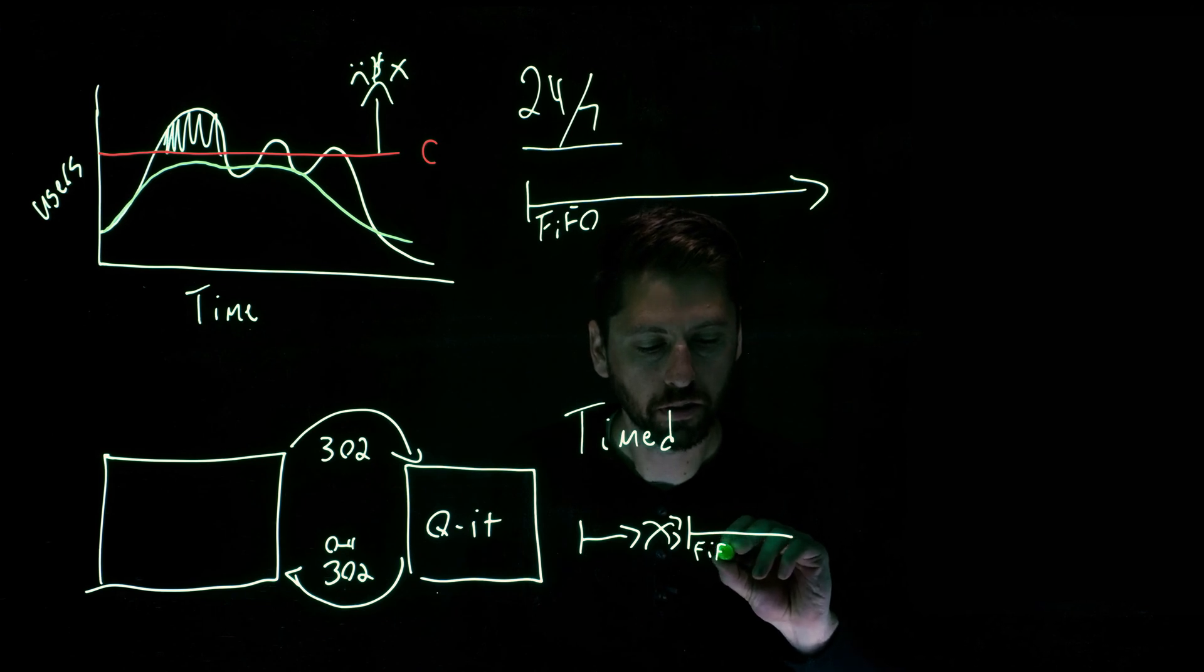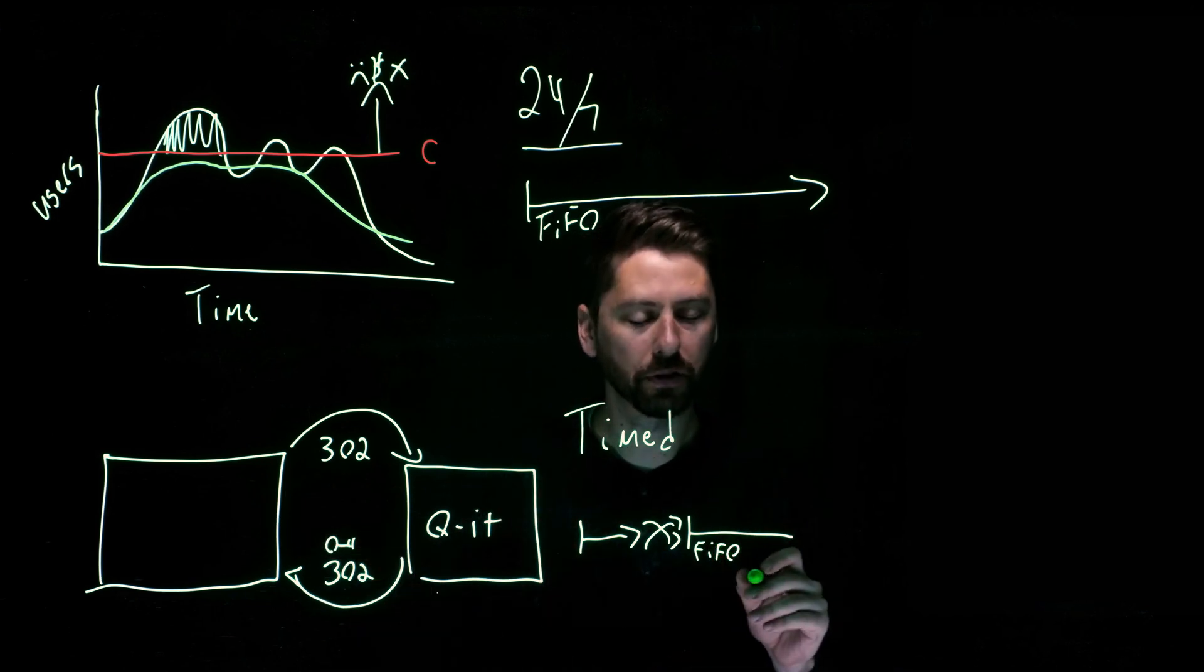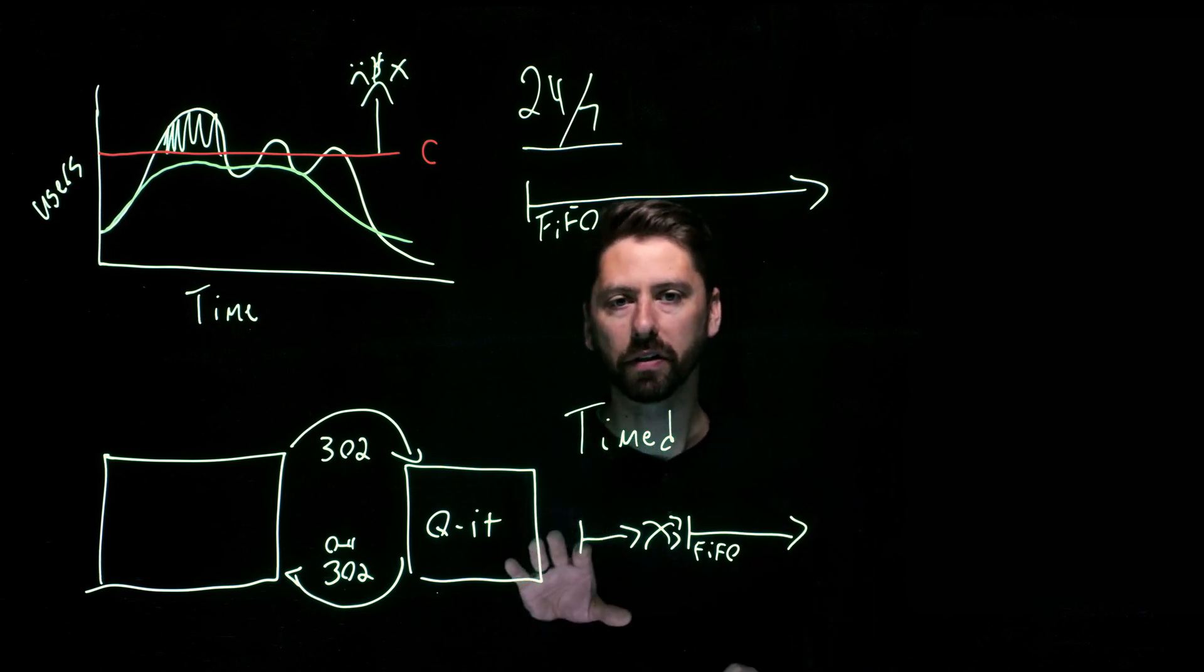Anyone that joins the queue after will be put at the end of the queue again and move in in a first in first out order. So those are the two main configurations.